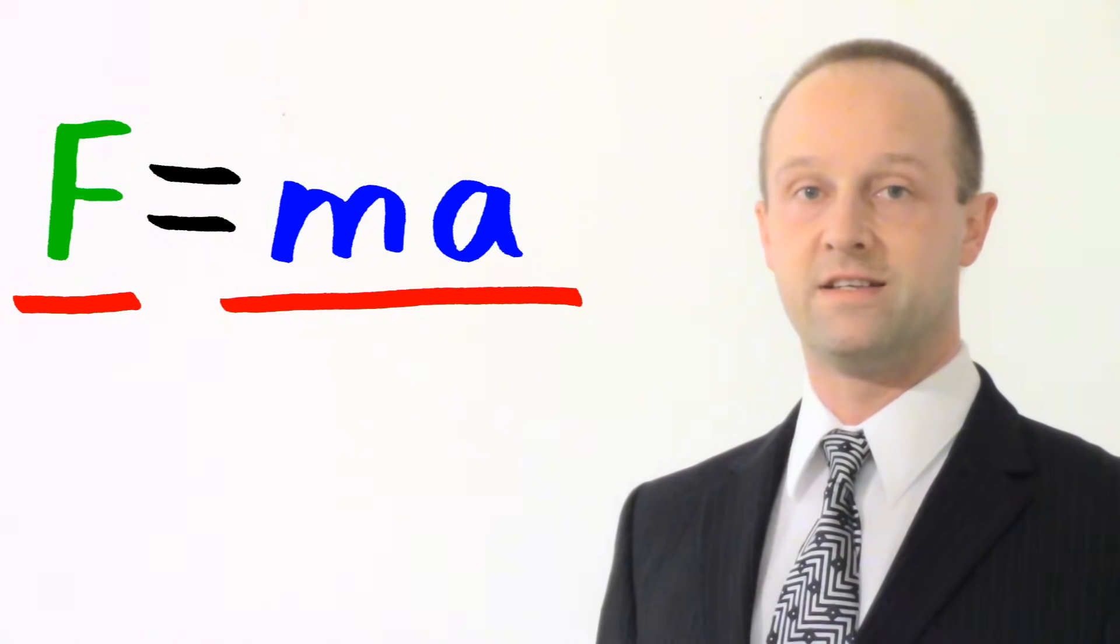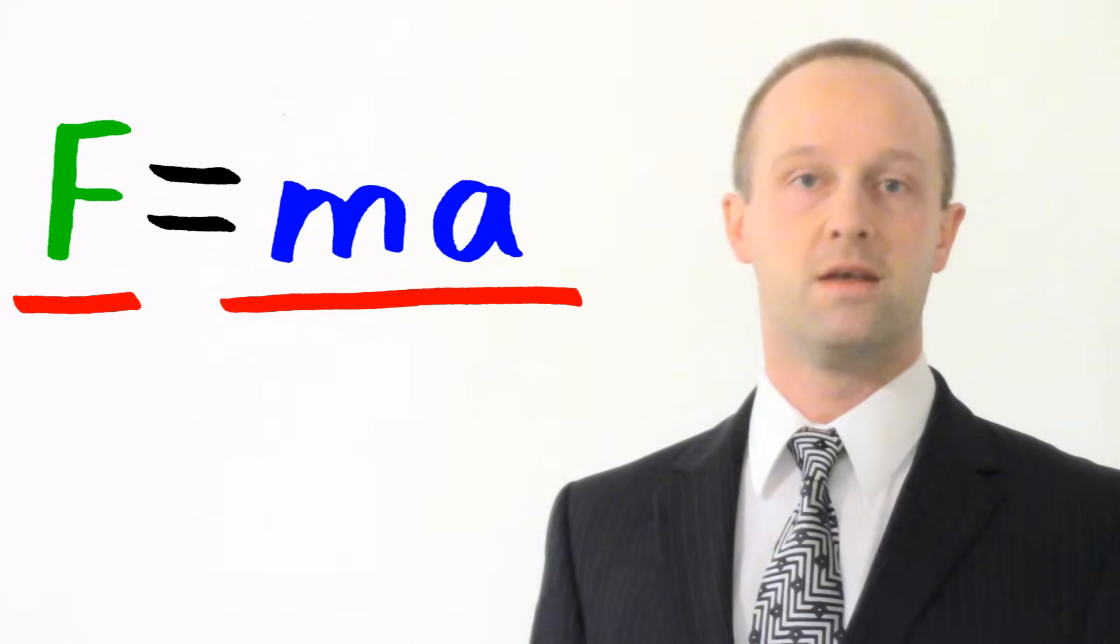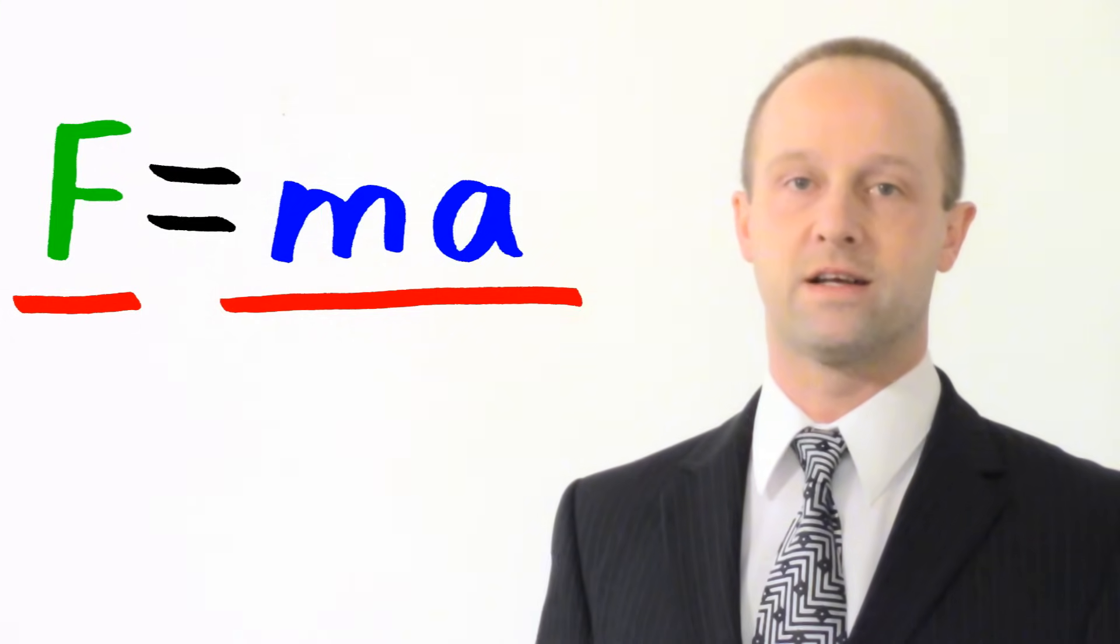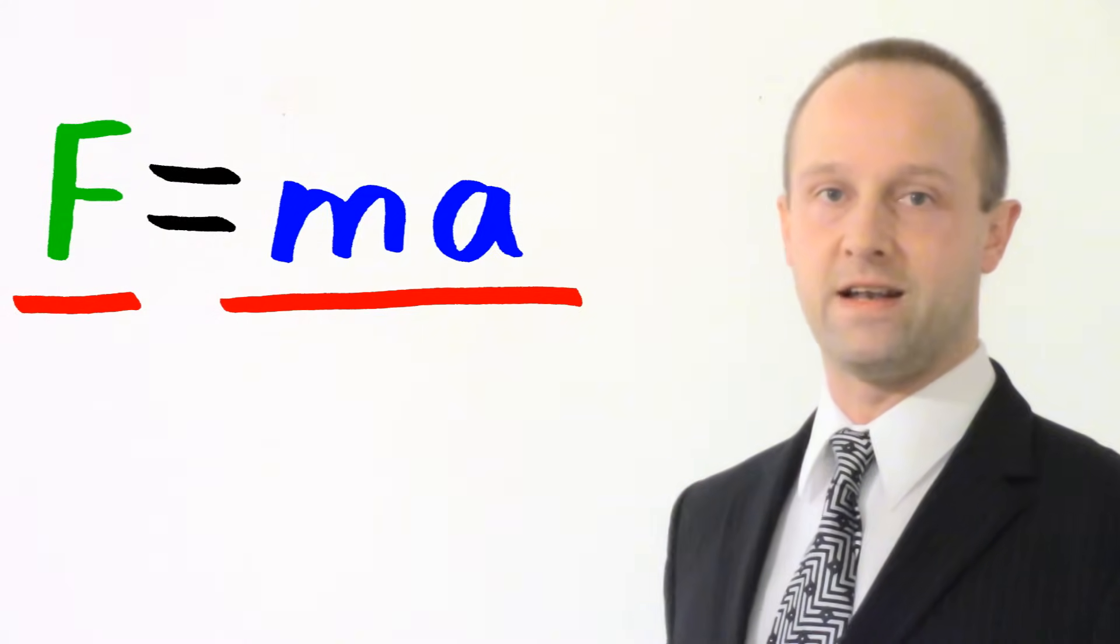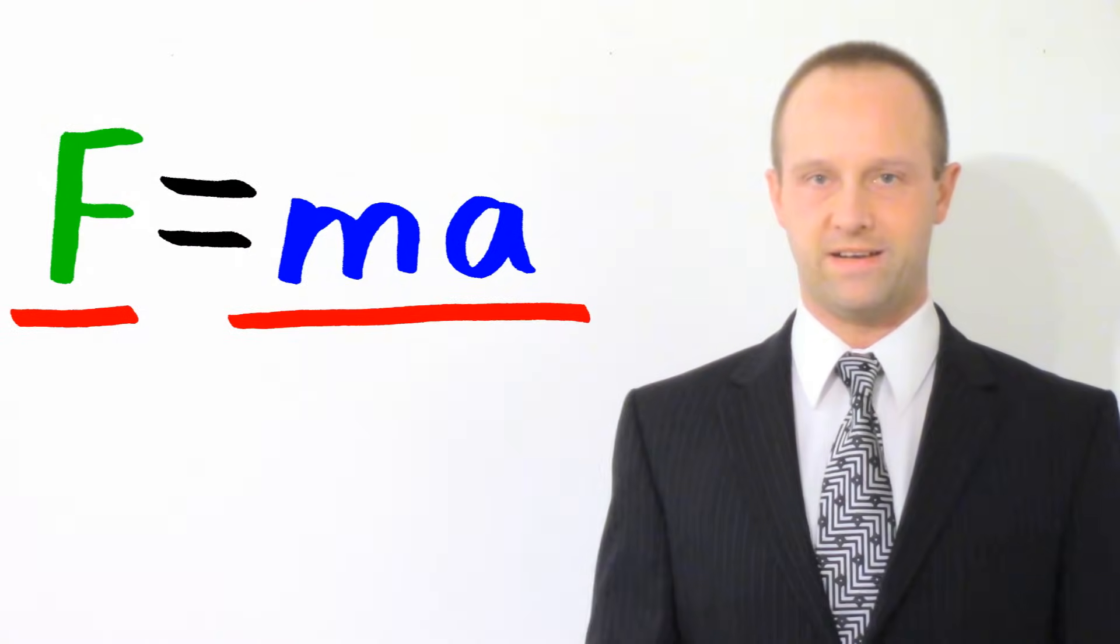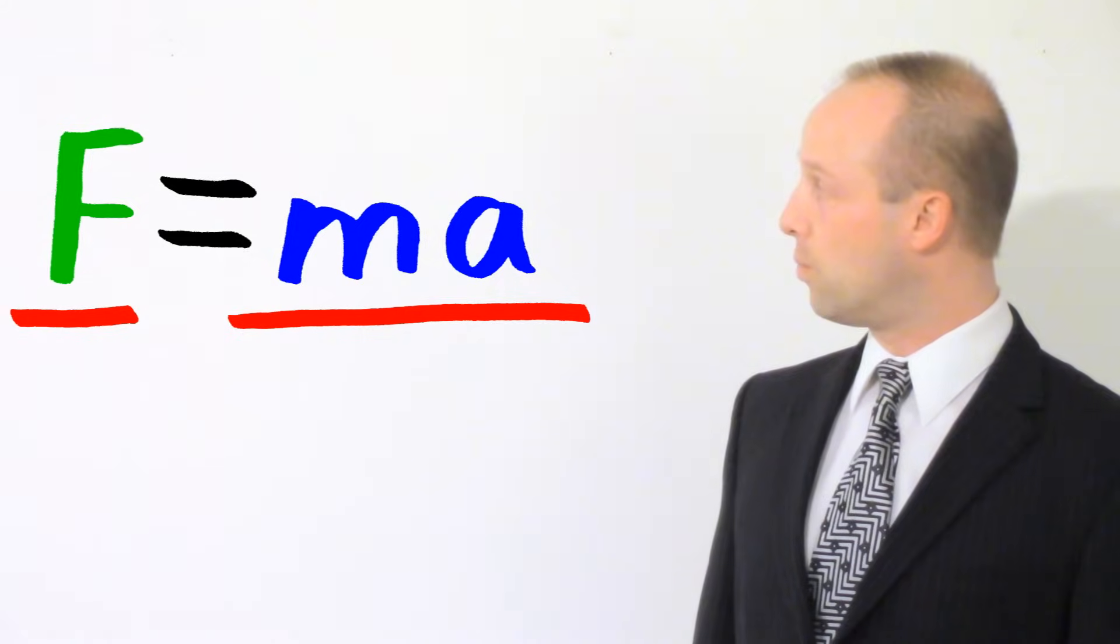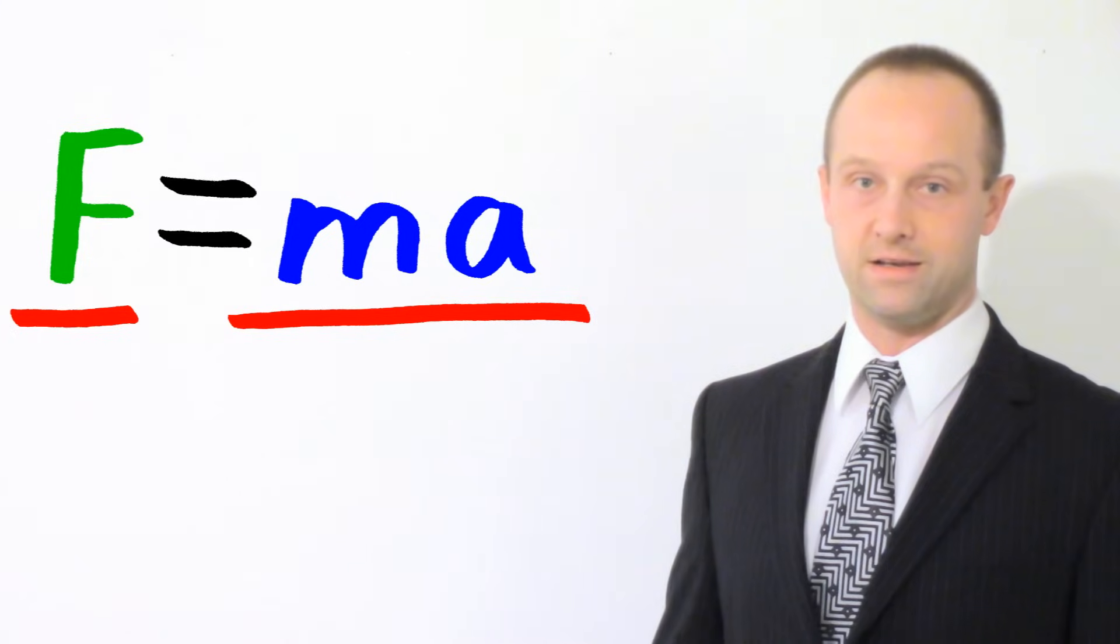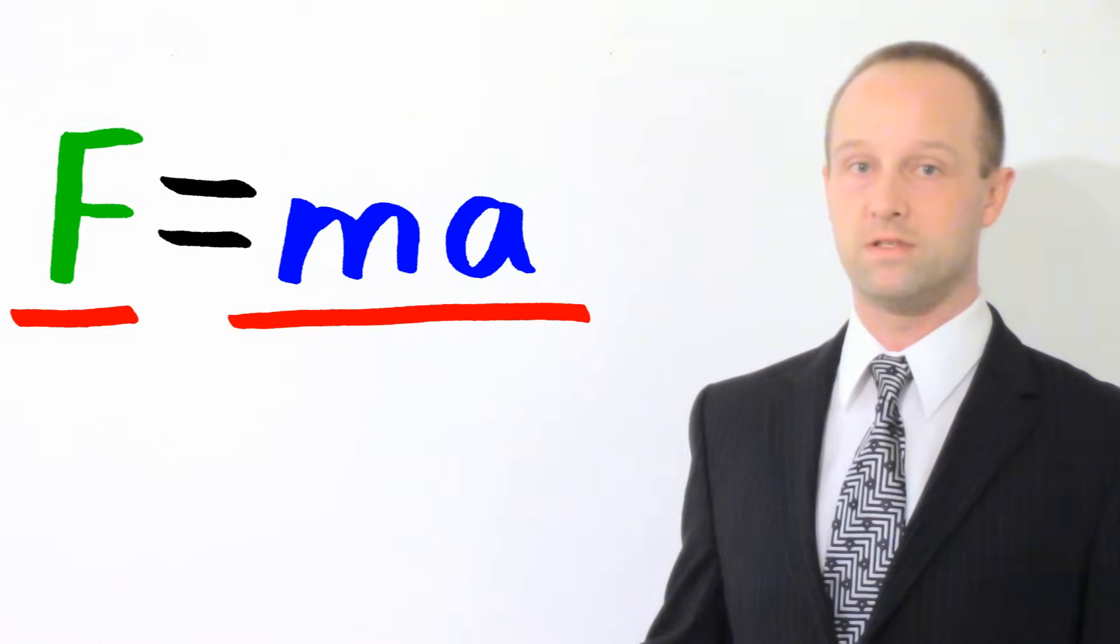Now the reason for this is so that you remember how you can move things from one side of the equation to the other. All you need to remember is that if you want to move something from one side of the equation to the other, you just move it to the other side of the line as well. So if it's on top of the line, you move it below the line. And if it's below the line, you move it on top of the line.